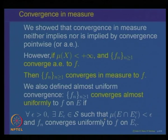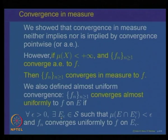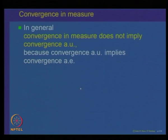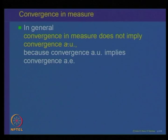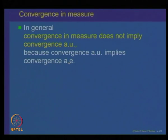Note this is different from saying that the convergence is uniform almost everywhere. Saying that F_n converges to F uniformly almost everywhere means except for a null set F_n converges to F, whereas almost uniform convergence says that outside a set of measure epsilon, for every epsilon there is a set E_epsilon such that outside that set the convergence is uniform. We showed that convergence in measure does not imply almost uniform convergence, because almost uniform convergence implies convergence almost everywhere, which is not true in general.